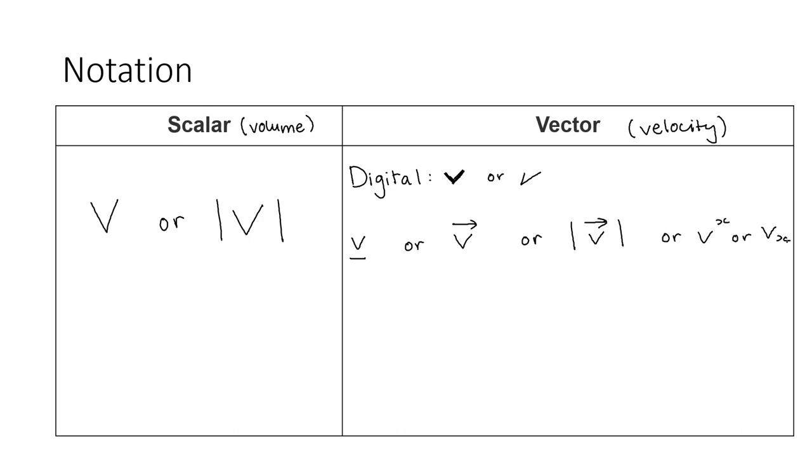You can also determine the direction of the vector from the way in which the arrowhead points. For example, if it points to the right, the direction is to the right. You may also see a vector written as a lowercase letter with a super or subscript of x.